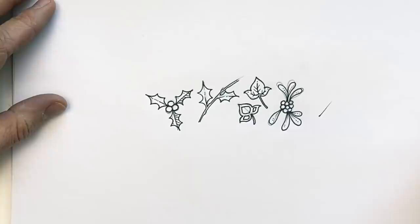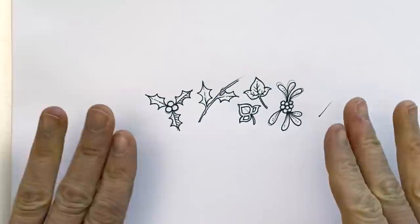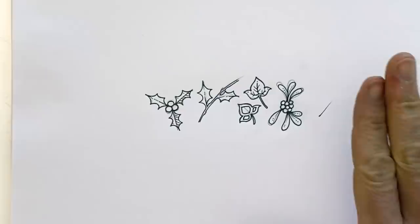Now, really important here, we've finished our inking, leave this to dry. If you try and erase it straight away, you're just going to smudge the ink. The ink has to have completely dried and then we can very gently erase away the pencil lines.